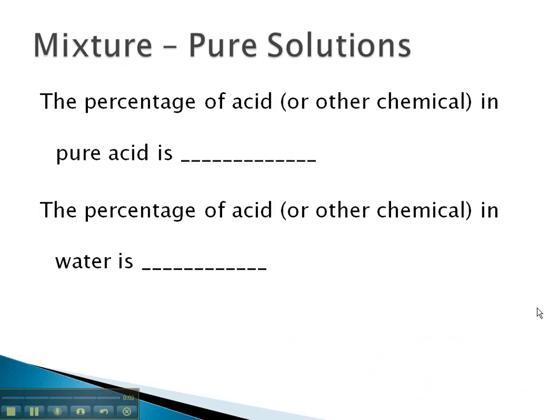In this video, we will look at solving mixture problems which use pure solutions. The important thing to remember is that the percentage of acid or other chemical in pure acid will be 100%, because it's pure acid, which as a decimal is 1.0.